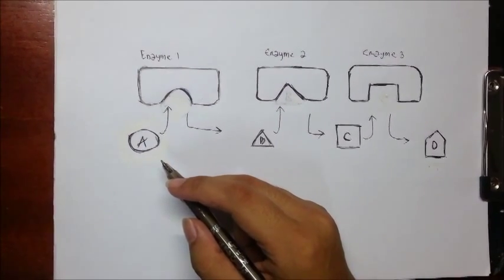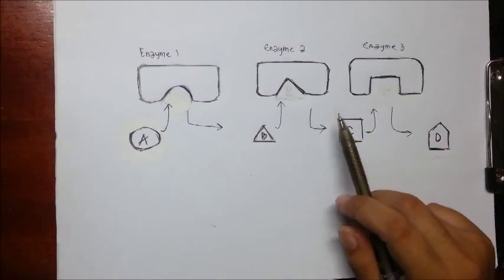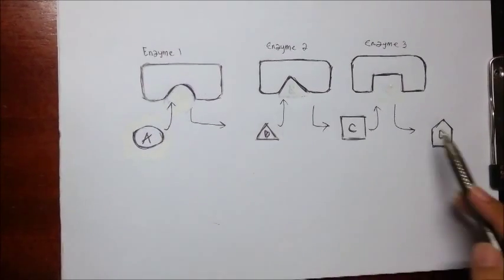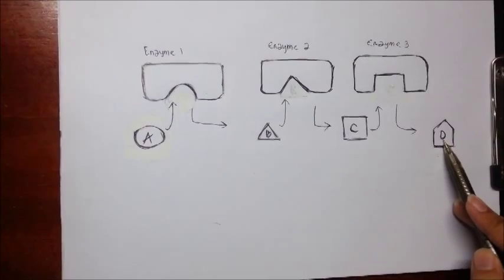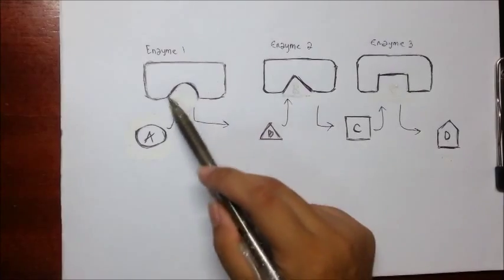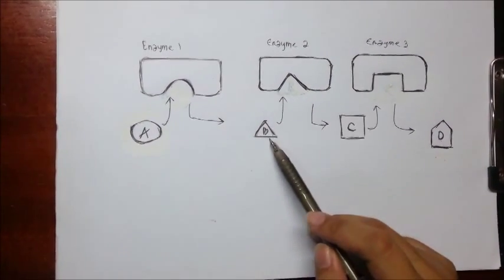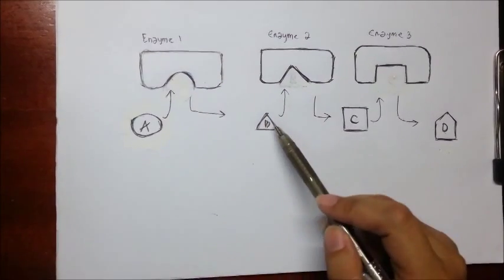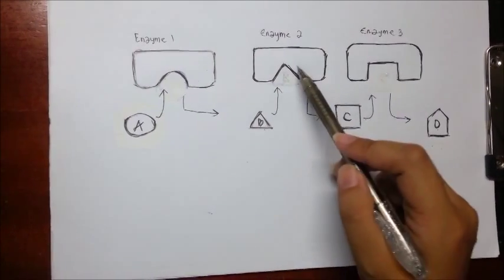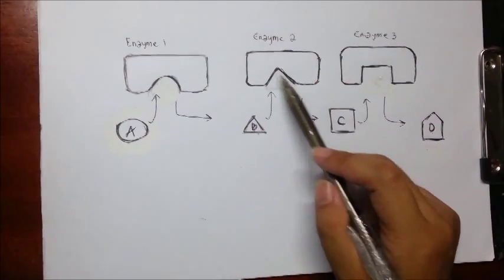A pathway consists of three enzymes. This pathway begins by acting on substrate A and making the final product D. On the way, A needs to interact with enzyme 1 through the active site. A is converted into product B by enzyme 1. B, being a product of enzyme 1, is also a very specific substrate for enzyme 2.